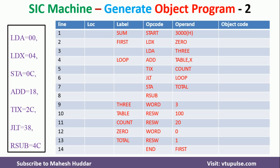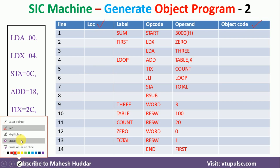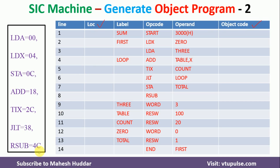The same assembly language program I have represented in the form of columns. I have added two more columns — the first column is the location counter and the last column is object code. The first thing I need to do is write the location counter for each and every instruction, and then write the object code. Finally, I need to write the object program.